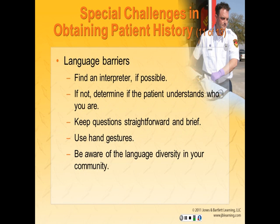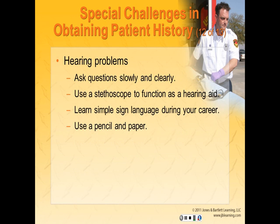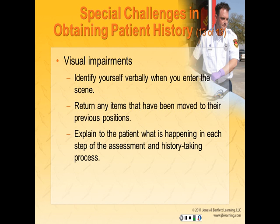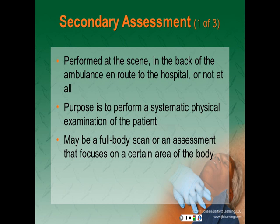For language barriers, find an interpreter if possible. Keep questions straightforward and use hand gestures. Be aware of language diversity within your community. For patients with hearing impairment, ask questions slowly and clearly, use a stethoscope as a hearing aid if needed, learn some simple sign language techniques, and always have a pencil and paper at the ready. For patients with visual impairments, identify yourself verbally when entering the scene, put any items moved back into their previous position, and explain to the patient everything you are doing during the assessment and history taking process.